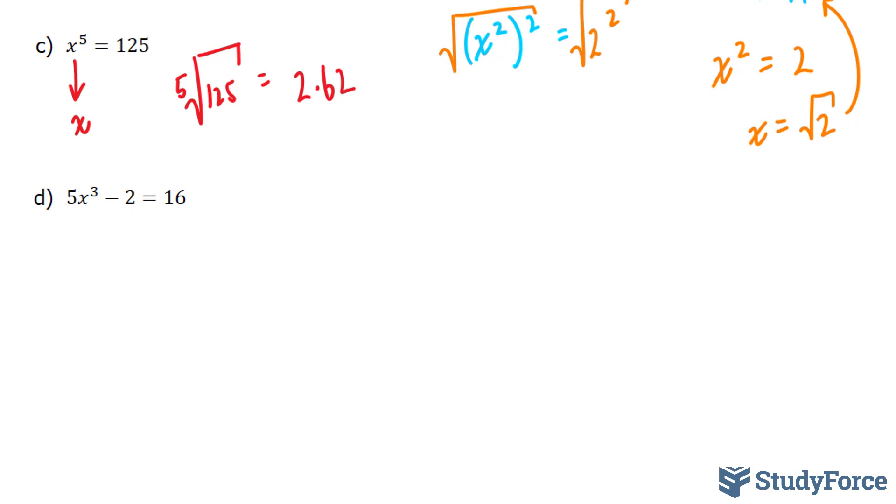Lastly, in Part D, here we have three terms. So just like before, I'm going to take this term over where I end up with 5x to the power of 3 is equal to 16 plus 2.